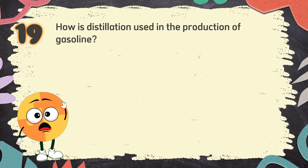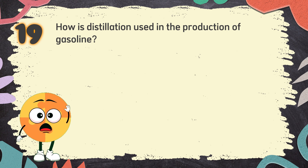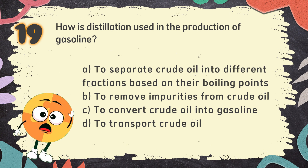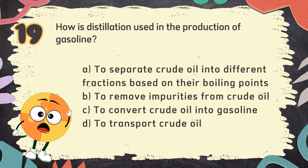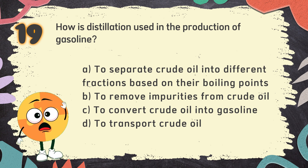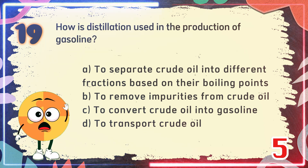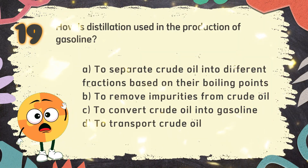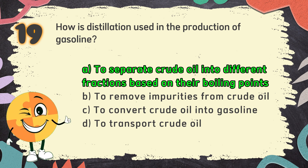Number 19. How is distillation used in the production of gasoline? The choices are: A. To separate crude oil into different fractions based on their boiling points. B. To remove impurities from crude oil. C. To convert crude oil into gasoline. D. To transport crude oil. The correct answer is A: To separate crude oil into different fractions based on their boiling points.